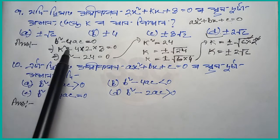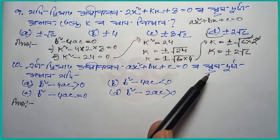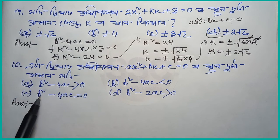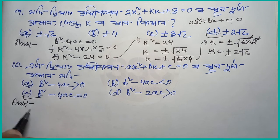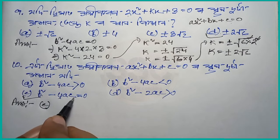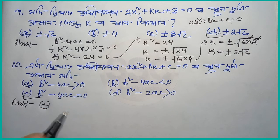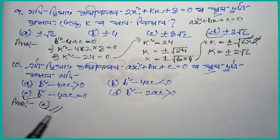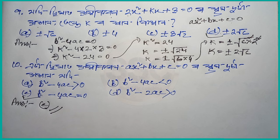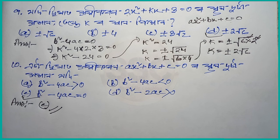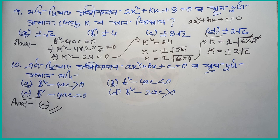You can see that b squared minus 4ac equal to 0. The option C is 2. The top b squared minus 4ac equal to 0. So it is a very important thing. Thank you so much for joining us. Please like and share.